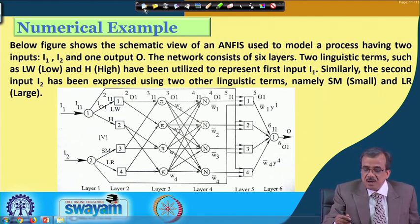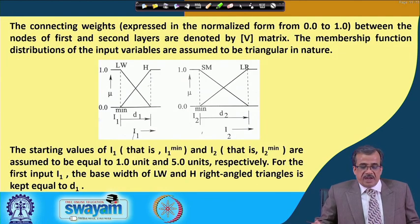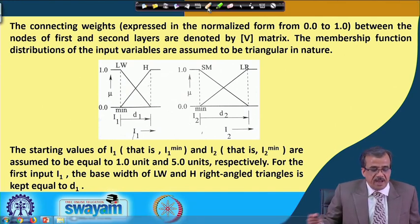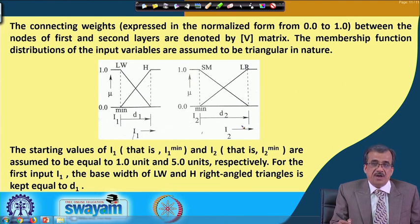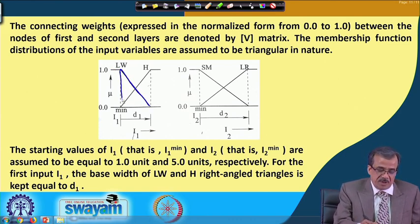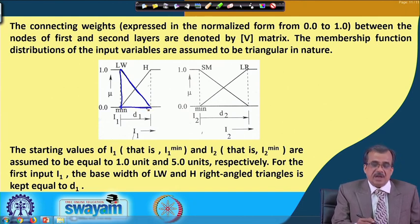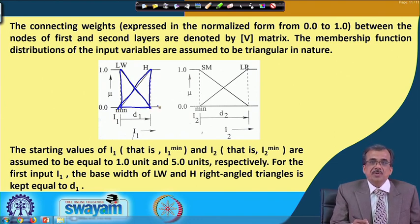Let us see the other part of the statement of this particular problem. The connecting weights are lying in the range of 0 to 1, and if you see the membership function distribution which we have considered for the two inputs I1 and I2: for simplicity, we have considered the 'low I1' as this type of membership function distribution — a right-angle triangle — and for 'high', another right-angle triangle, and there is overlapping also.